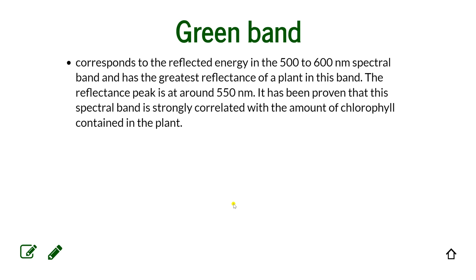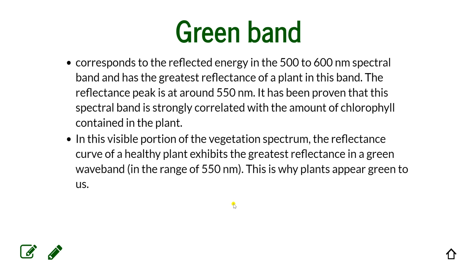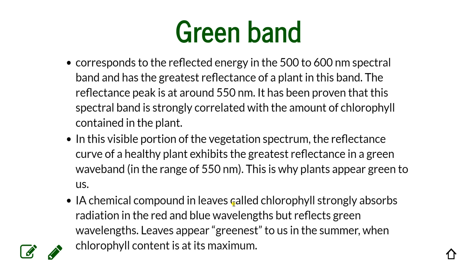The green band is in our visible spectrum, reflecting energy between 500 and 600 nanometers — that's why we see plants as green, because they reflect the most green light, with a peak around 550 nm. It is correlated with the amount of chlorophyll: the greener the plant, the larger the value in the green band raster. Leaves appear greener in summer when the chlorophyll content is maximum.